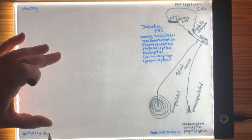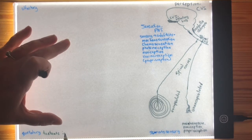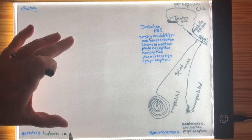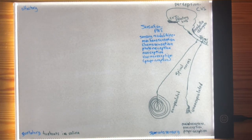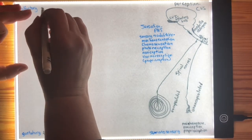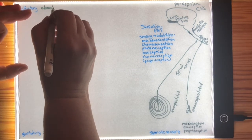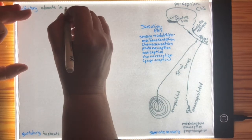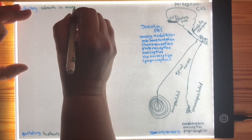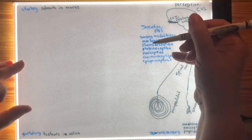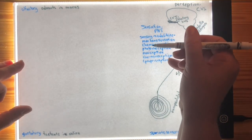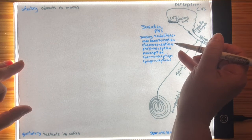Let's move on to the gustatory system. When we discuss the gustatory system, we are discussing chemicals called tastants, which are basically particles from the food that you're eating. Tastants must be dissolved in saliva in order to be received. Similarly in the olfactory system, we have chemicals called odorants — particles of the things you're smelling — and these must be dissolved in mucus. Tastants are dissolved in saliva; odorants are dissolved in mucus, otherwise they would never be sensed properly.